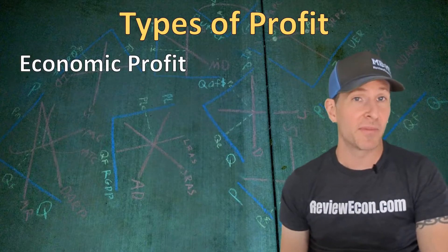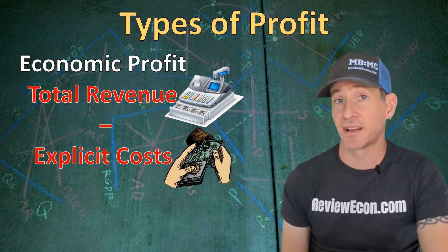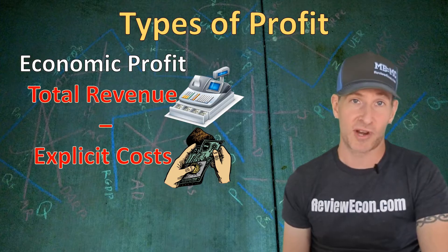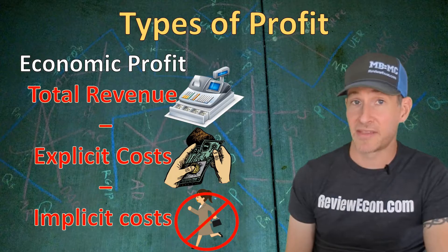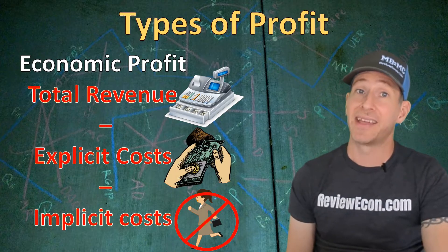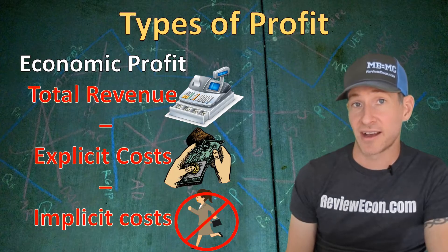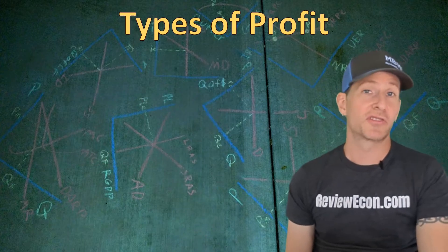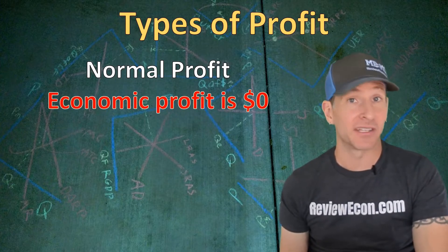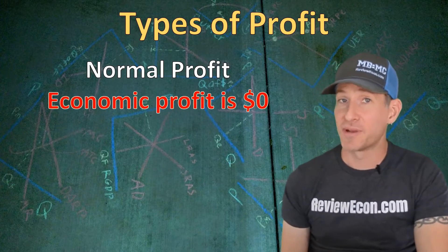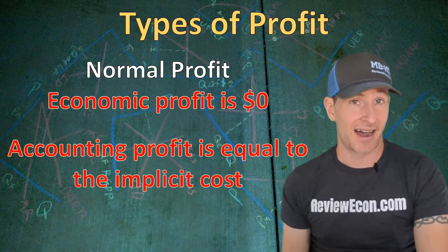Our second type of profit is called economic profit, and that one is going to be more important within this class. When calculating economic profit, we still take the total revenue and subtract the explicit costs, but we also subtract the implied or implicit costs as well. The implicit cost is the lost money that the entrepreneur could have earned had they not made the product — essentially the value of the opportunity costs. When we use the term normal profit, we mean that economic profit is zero, and the accounting profit will equal the implicit cost.